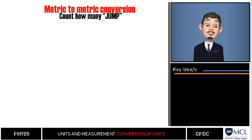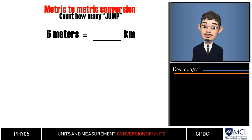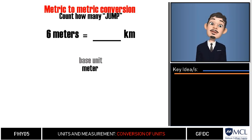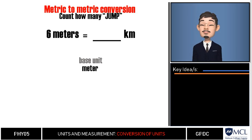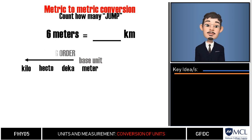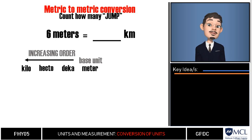For example, you want to know how many kilometers are in six meters. We have the base unit meter, and we list down the prefixes studied in the last video. We place meter in the center; to its left in increasing order: deka, hecto, and kilo; to its right in decreasing order: deci, centi, and milli.